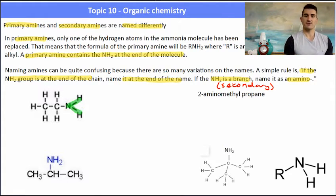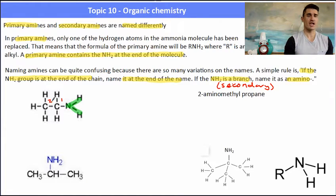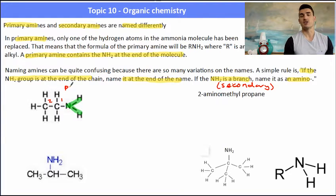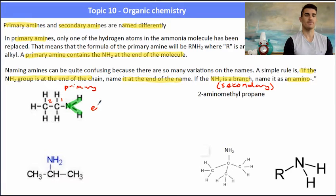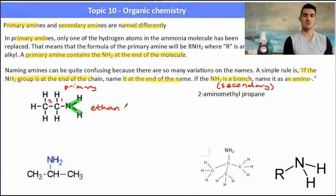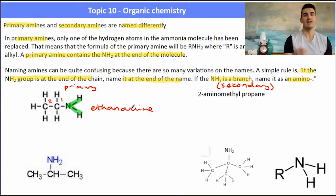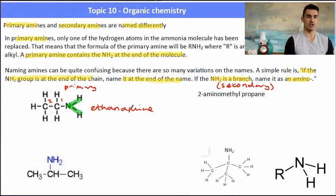For this first example we have our NH2 at the start of the chain. We have two carbons — that's a primary amine. So I'm going to name that amine group at the end of the name because it's a primary. Two carbons is 'eth', so this is ethanamine — the amine at the end of the name.